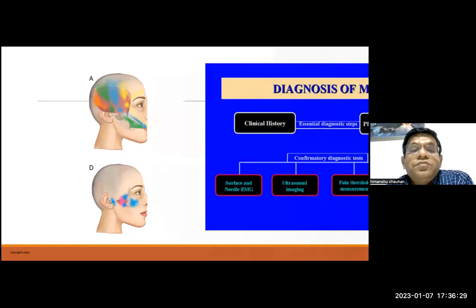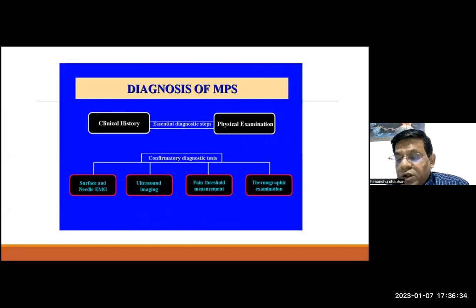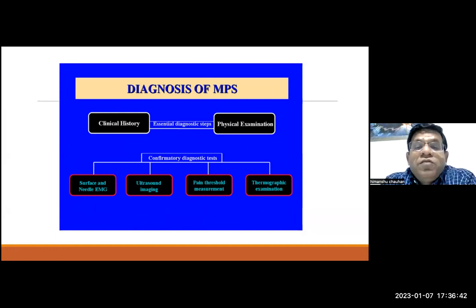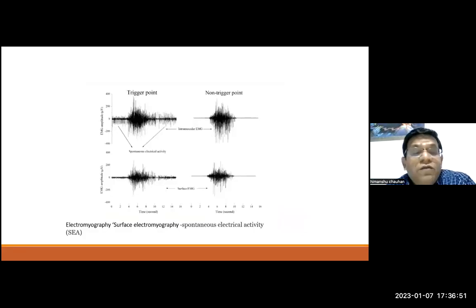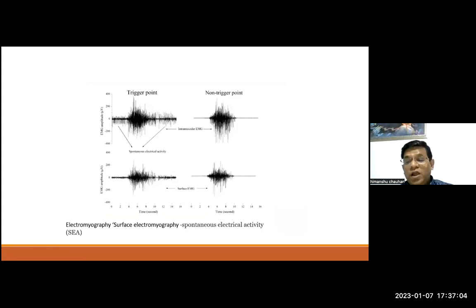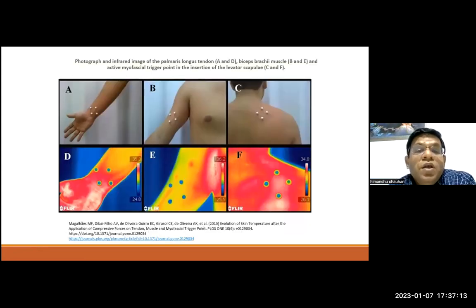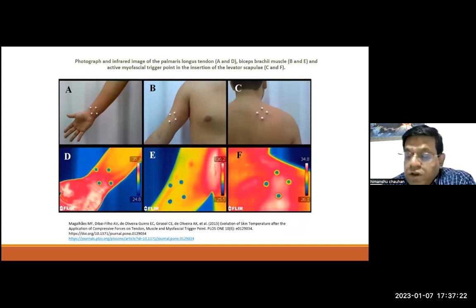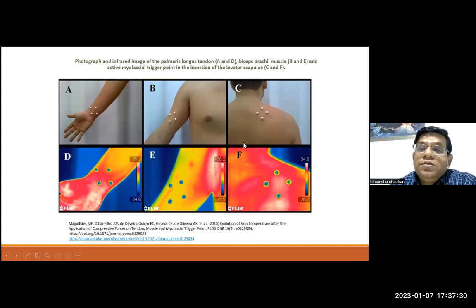The main pillars for diagnosing myofascial pain syndrome are clinical history and physical examination. Confirmatory diagnostic tests are not required clinically but can be done if available. EMG will show spontaneous electrical activity at trigger point areas compared to non-trigger point areas, confirming the clinical diagnosis. Infrared thermography shows hot and cold areas that correlate with clinically identified trigger points.